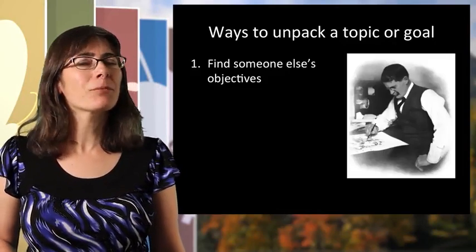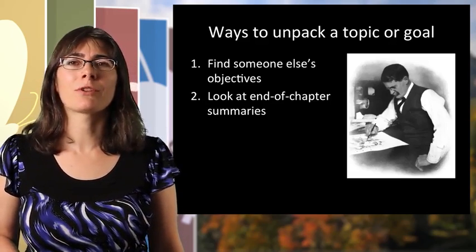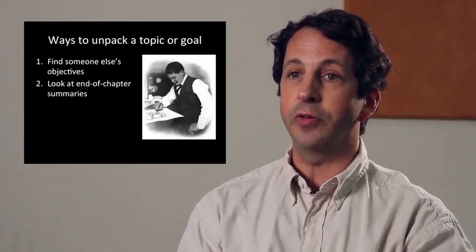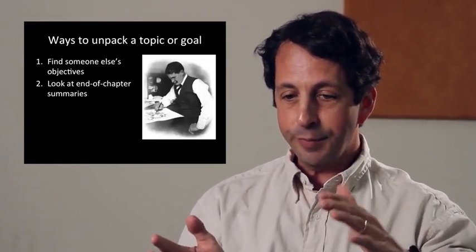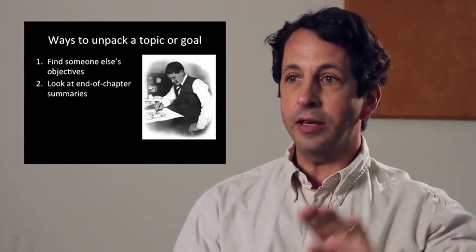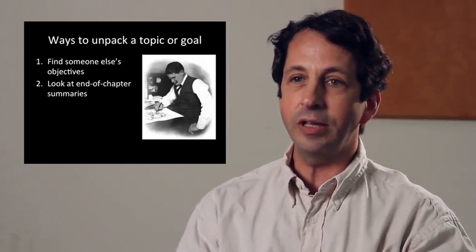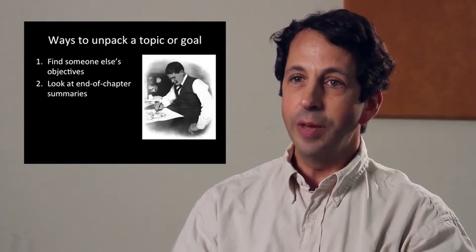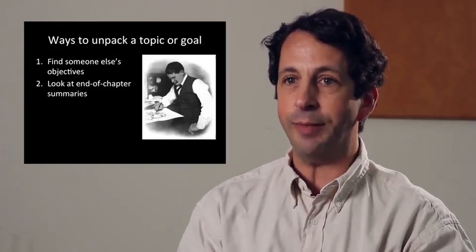So here are some strategies that you could use for unpacking a topic to create learning objectives. You might find someone else's objectives and borrow their ideas. Another thing is that the end of chapter summaries can be useful. Textbook authors in physics have thought very hard about breaking the topical area down into chunks. And there's usually a summary at the end of the chapter. The textbook summary is usually mostly a list of formulas and definitions. But it's a good synthesis of what were the key ideas of that chapter.